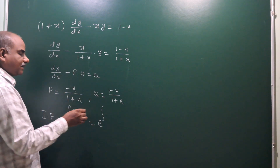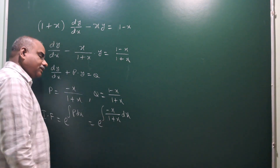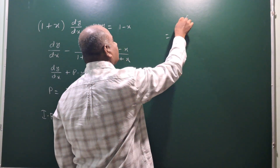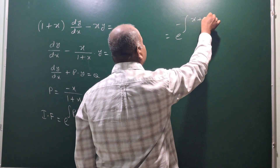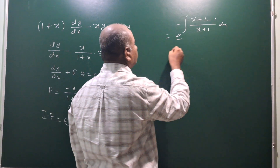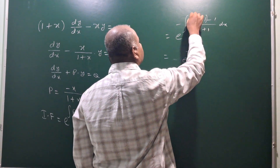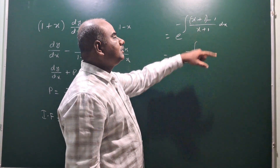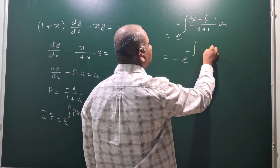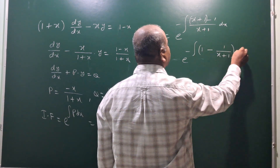Next, the integrating factor is e to the power of integral of P dx, so e to the power of integral of minus x by (1 plus x) dx. To integrate minus x by (1 plus x), take minus outside; the numerator can be written as x plus 1 minus 1, giving us e to the power of minus integral of (x plus 1 minus 1) by (x plus 1) dx.